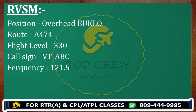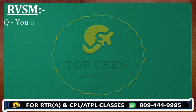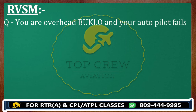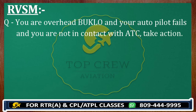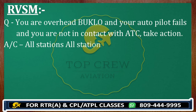To make a call, you call all stations. Wherever you are, you tell them: "All stations, in the vicinity of Boklo — this is Victor Tango Alpha Bravo Charlie on 121.5." Then give your position. The format is: position, time, route, flight level. For example, if your autopilot fails and you are not in contact with ATC, you would call: "All stations, in the vicinity of Boklo, Victor Tango Alpha Bravo Charlie on 121.5."